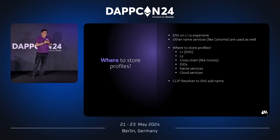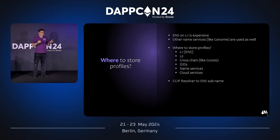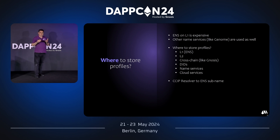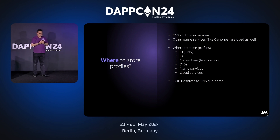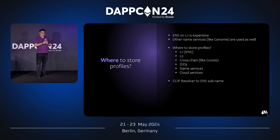What is the problem if we only use ENS? It's nice — everyone with an ENS name can use it — but ENS lives on Layer 1, and that makes it potentially expensive to publish a profile when gas prices are high. There are also other name services like Genome, which lives on the Gnosis Chain, and ecosystems which need to use these name services and want to have profiles stored there.